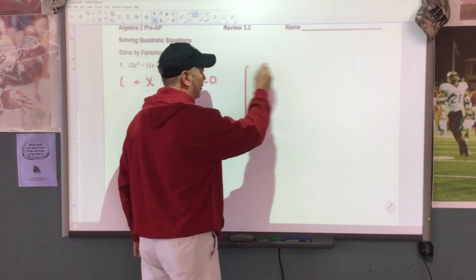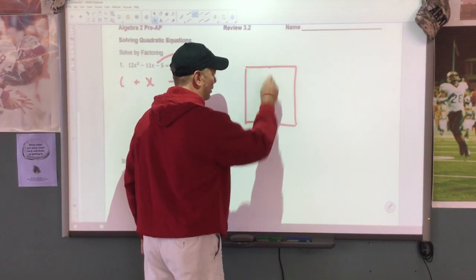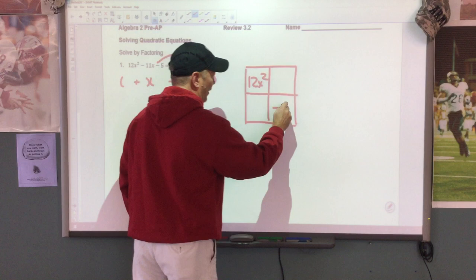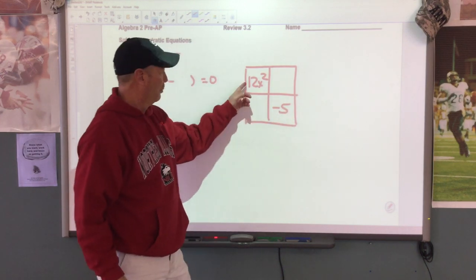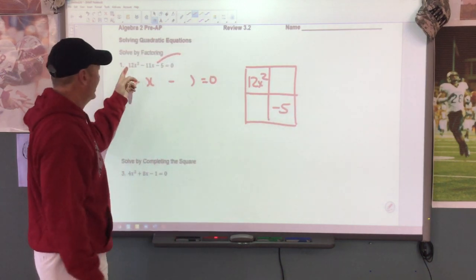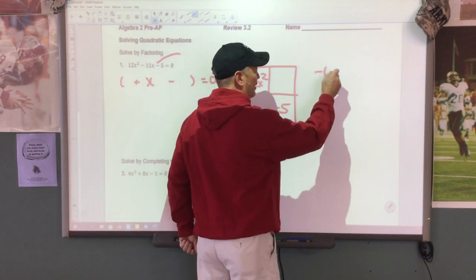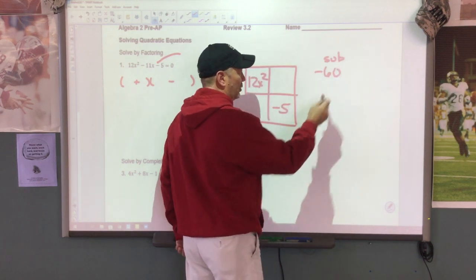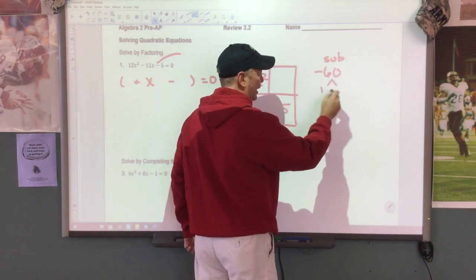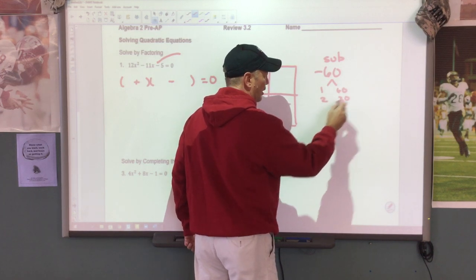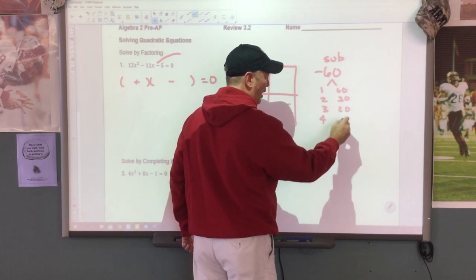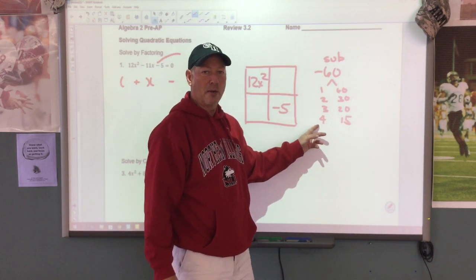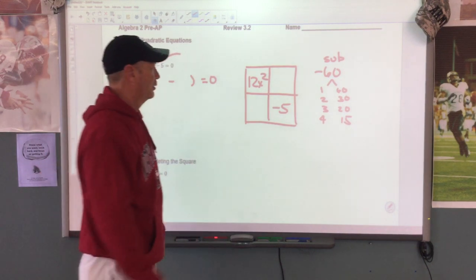In the box method, I'm going to put 12x squared here and a negative 5 here. We're going to multiply a times c, and you're going to get negative 60. Since this is the negative number, we're going to subtract. My choices are 1 and 60, 2 times 30, 3 times 20, 4 times 15. I'm going to stop right there because when I subtract these two numbers, that'll give me my 11.